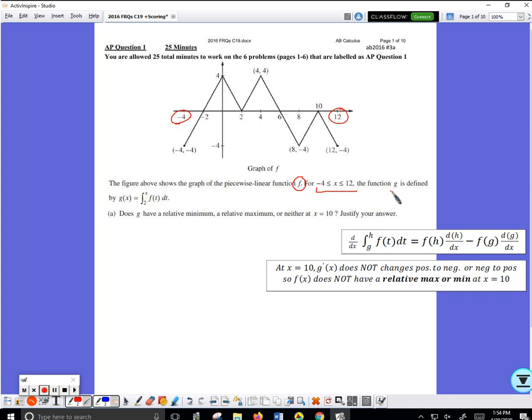Function g is this formula. Does g have a relative, not absolute, min or relative max or neither at x equal 10? Justify my answer. Okay, so I remember, look at my golden notes, remember a box, there's this box.